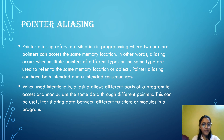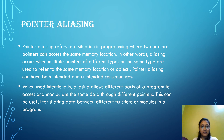Now, let us come to the main topic, pointer aliasing. Pointer aliasing refers to a situation in programming where multiple pointers can access or refer to the same memory location or object. In other words, it occurs when different pointers have the ability to access and modify the same data through different names or references.